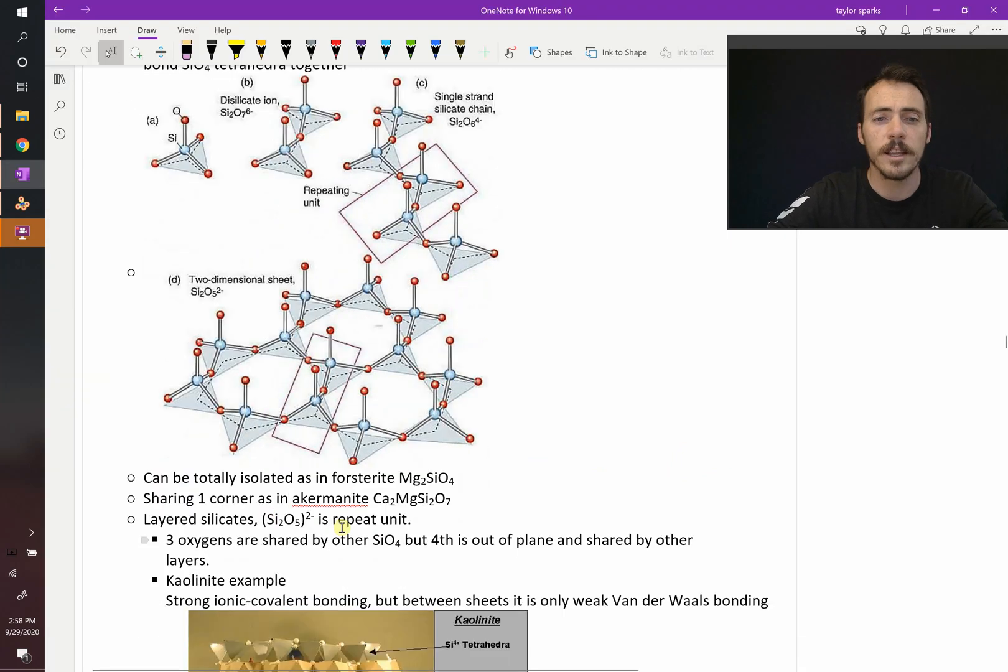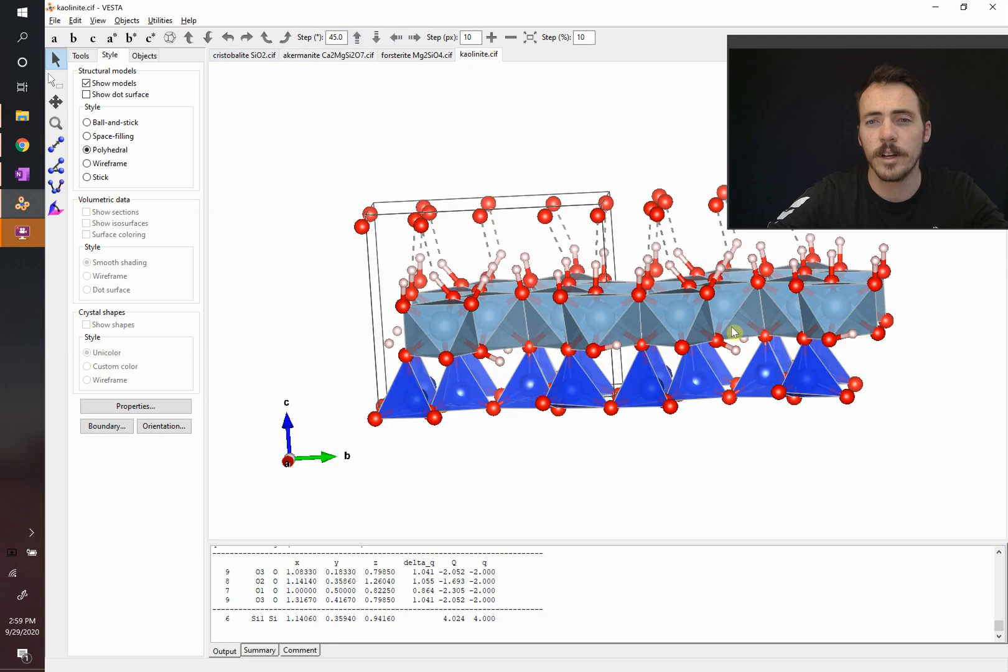You can have layered silicates, where you have this Si2O5 2- repeat unit. That's the case in things like kaolinite clay. Most of the clay that you hopefully had a chance to play with when you were in elementary school, maybe you started with a lump of clay, and when you added water to it, it became plastic and flowable. That's because it's made up of lots of layers.